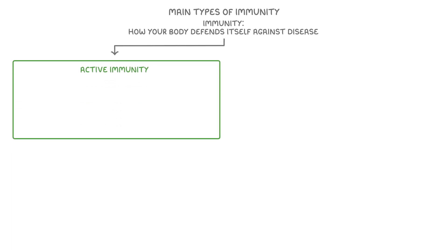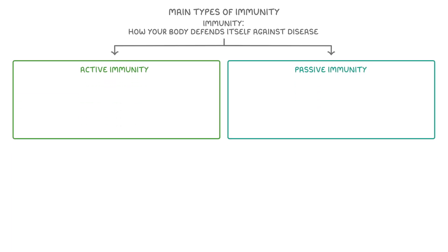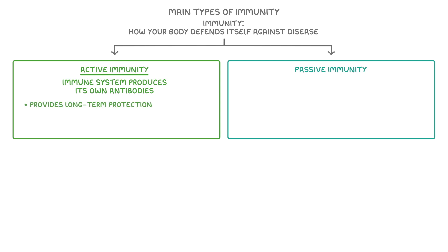Let's begin by exploring the main types of immunity. Immunity is basically how your body defends itself against disease, and there are two main types: active immunity and passive immunity. Active immunity is where the immune system produces its own antibodies, and a key feature of this is that it provides long-term protection because it leads to the production of memory cells that remember how to fight the pathogen if you encounter it again. This allows for a faster and stronger response.